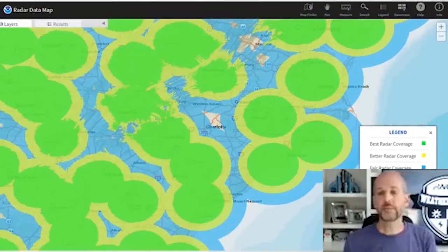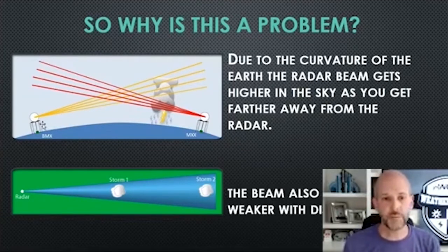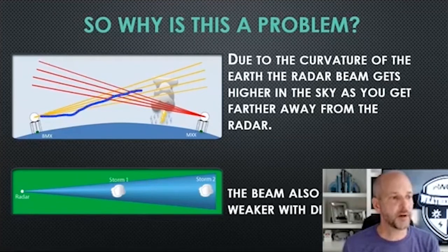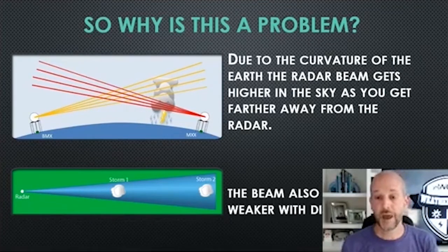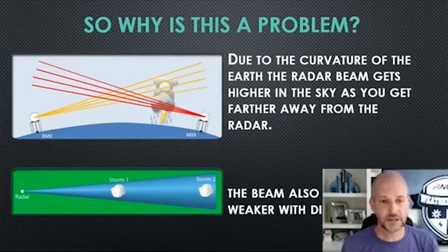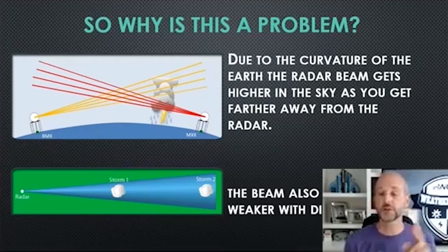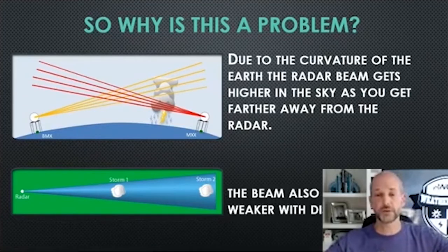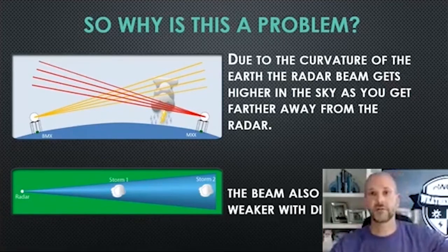Why is this a problem? Remember, the radar beam goes out in a straight line, but the earth is curved. So as the beam travels farther and farther away, the earth curves below it and the beam is looking higher and higher in the sky. Also, the radar beam starts very thin near the radar but gets wider with distance. The farther you are from the radar, two things happen: the beam becomes very broad and resolution goes down, it also becomes weaker because energy loses momentum and strength over distance.